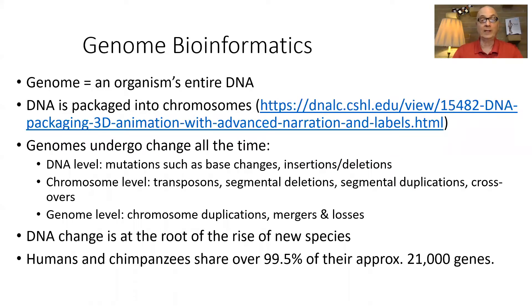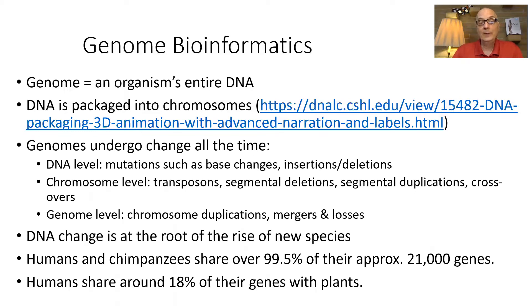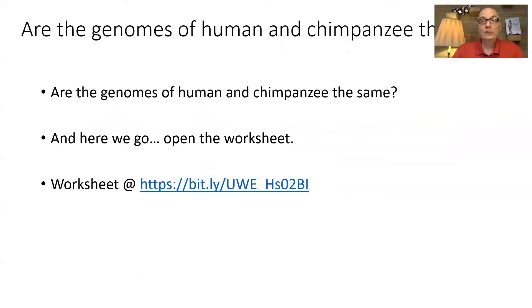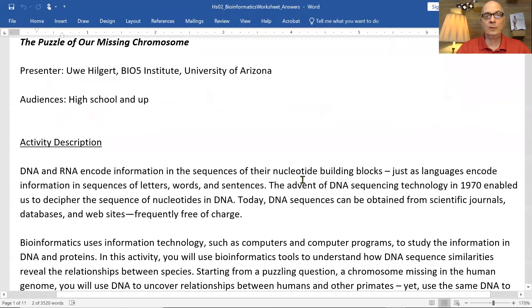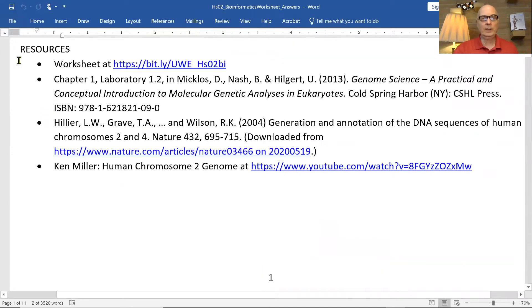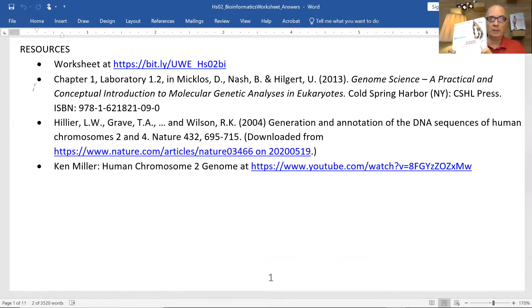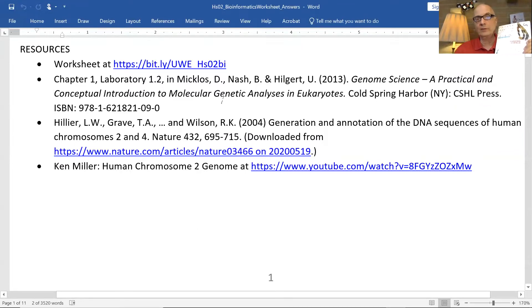Humans and chimpanzees share about 99.5% of their genes. Humans even share genes with plants, though much less than that. The question I'd like to examine is to what extent are the genomes of human and chimpanzee the same. The first page of the worksheet holds a description of the activity, including a few resources — I'd like to point out this Genome Science book, which describes wet labs and bioinformatics laboratories in the context of genetic and genomic analysis in eukaryotes.